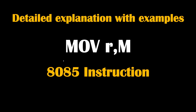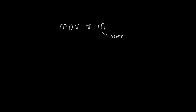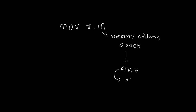In this instruction, we should know what are possible values of R and what are possible values of M. Here M stands for memory address, and that address is pointed by the HL register pair. So let's write MOV R comma M. This M is a memory address — it will be a four-digit address, any number between 0000H up to FFFFH, and this address is stored inside the HL register pair.